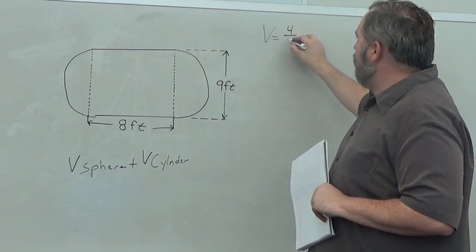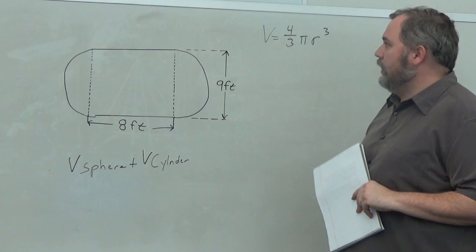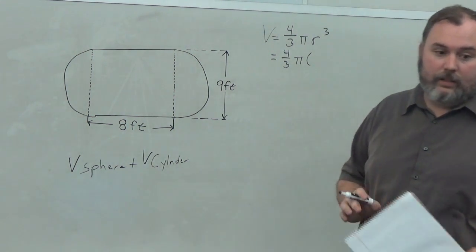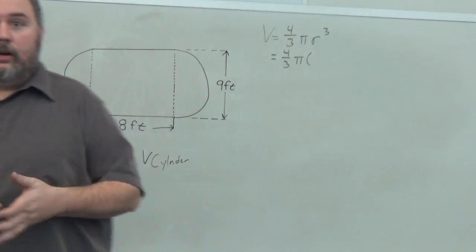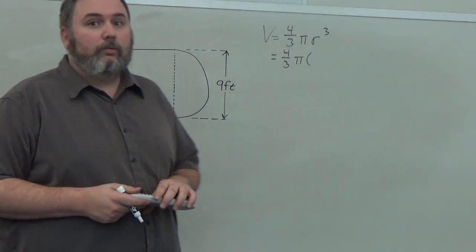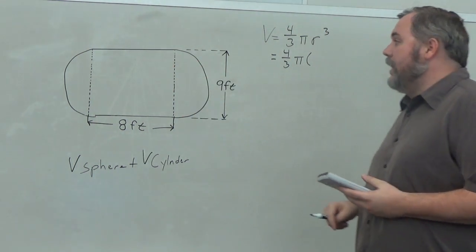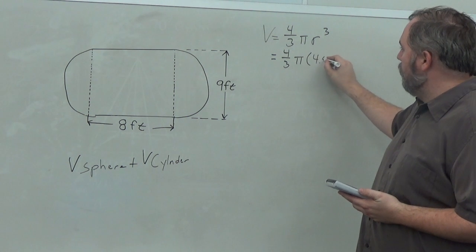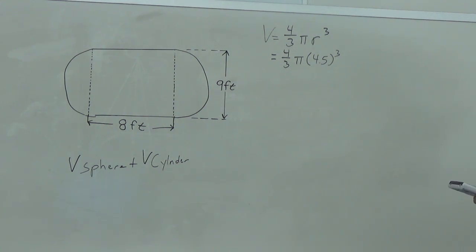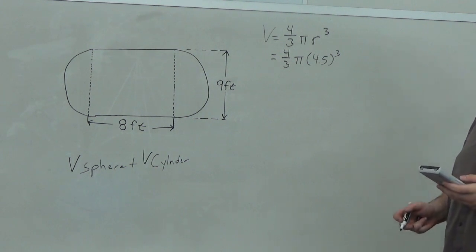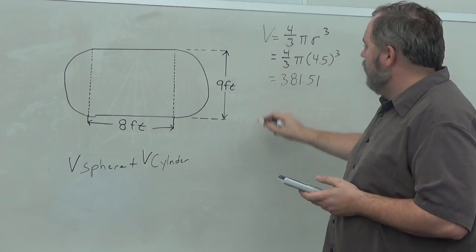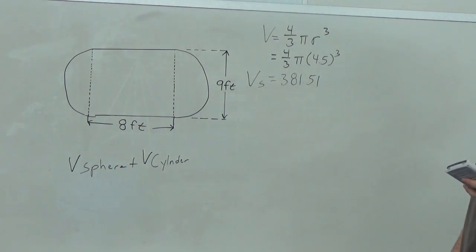Volume of a sphere: V = 4/3 πr³. The diameter is 9 feet, so the radius is 4.5 feet. Calculating: 4/3 × 3.14 × 4.5³ = 381.51 cubic feet. That's the volume of the complete sphere formed by the two hemispheres.